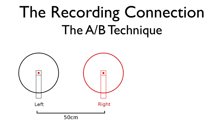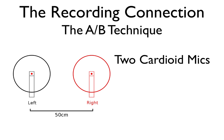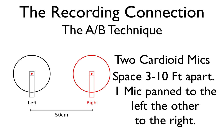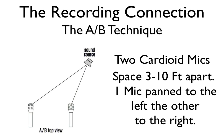The A-B technique uses two cardioid or omnidirectional microphones spaced three to ten feet apart from each other. One of these microphones will be panned all the way to the left, and one will be panned all the way to the right to capture the stereo image. The drawback to A-B recording is the potential for some undesirable phase cancellation. As you're recording, do a couple of test recordings to make sure this isn't occurring, and then adjust your setup to combat that.